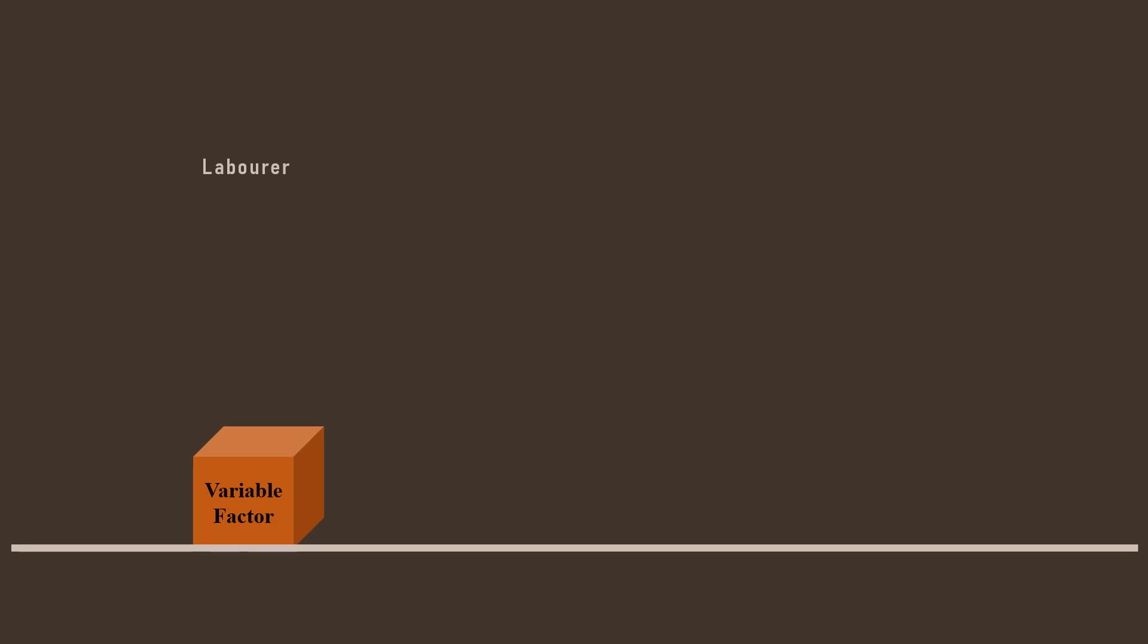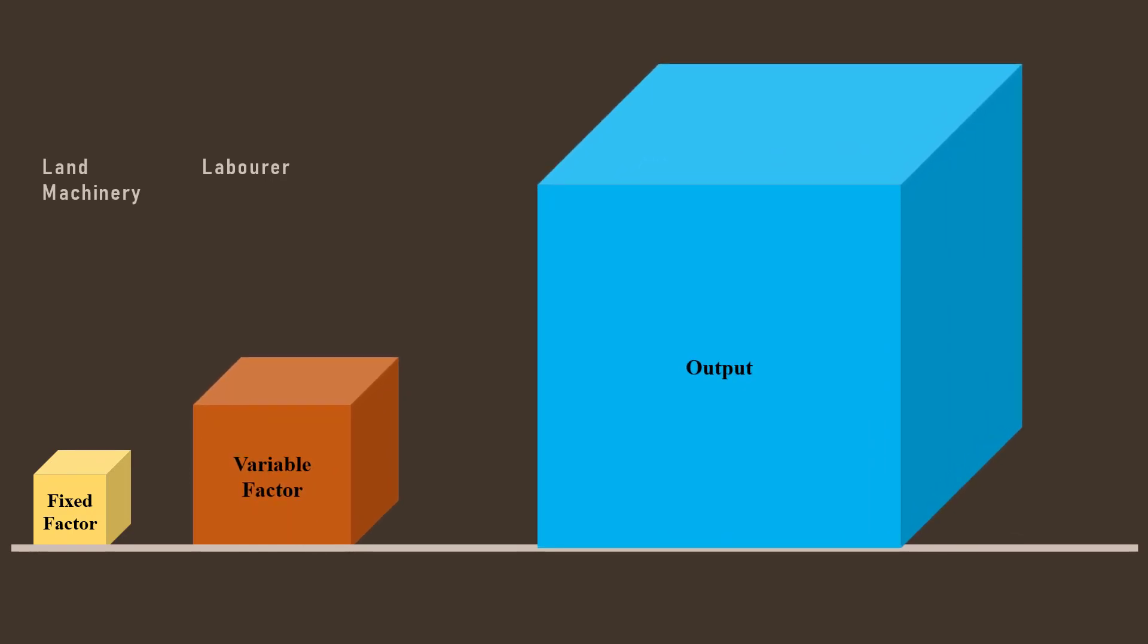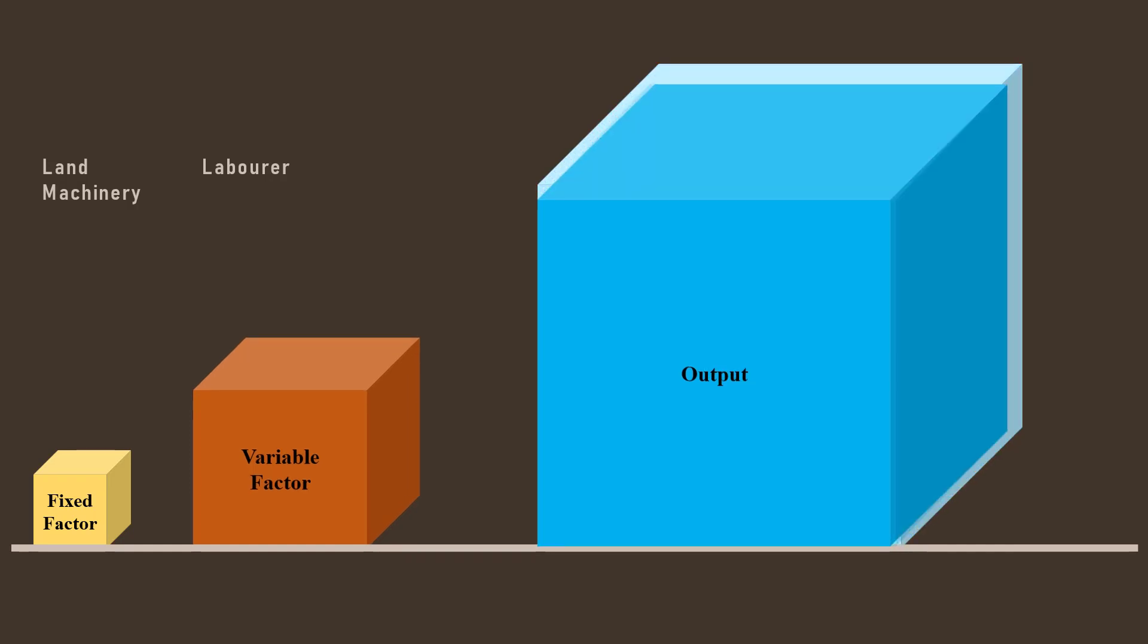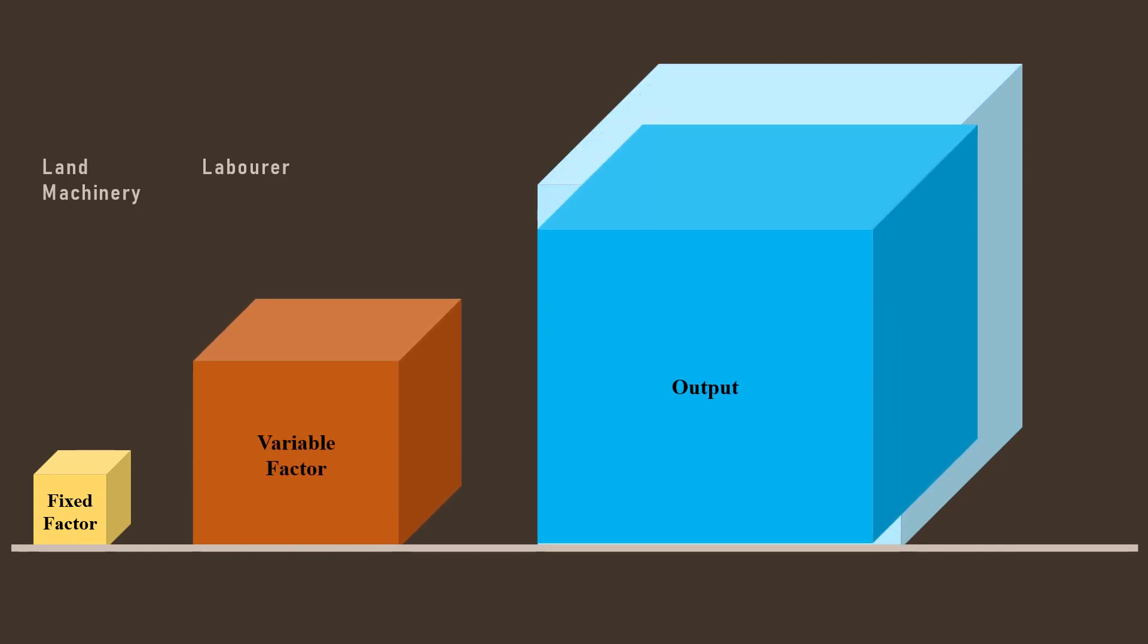Labor is a variable factor. Land and machinery are fixed factors. When the proportion of labor is increased with land and machinery, the total product increases. After reaching the maximum, it falls. The output behavior can be divided into three stages.